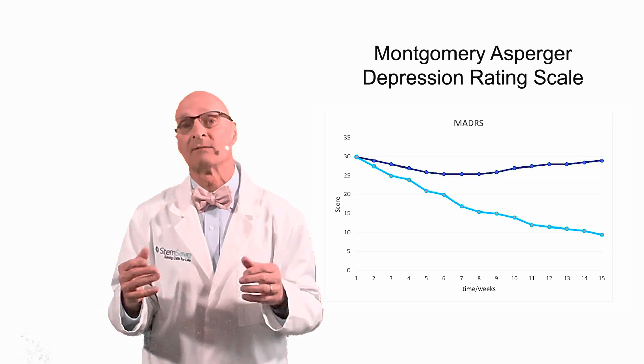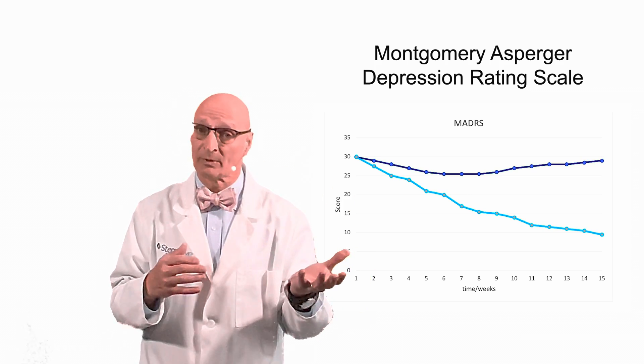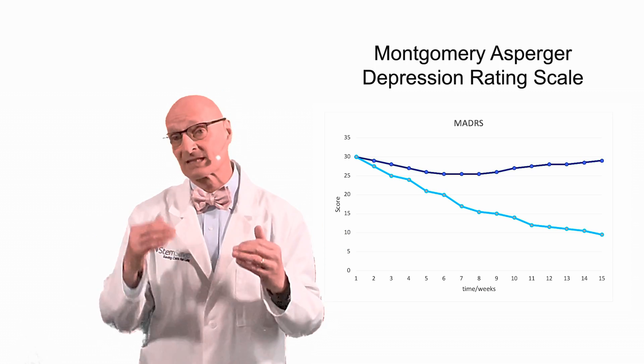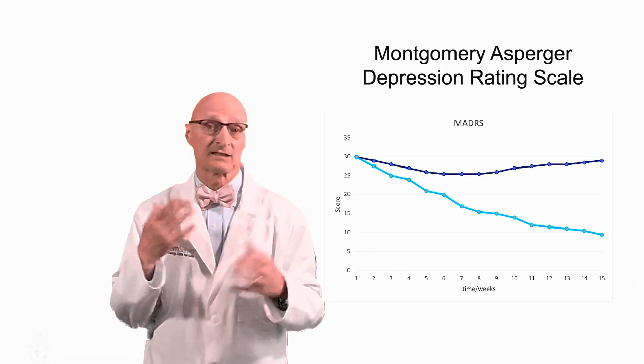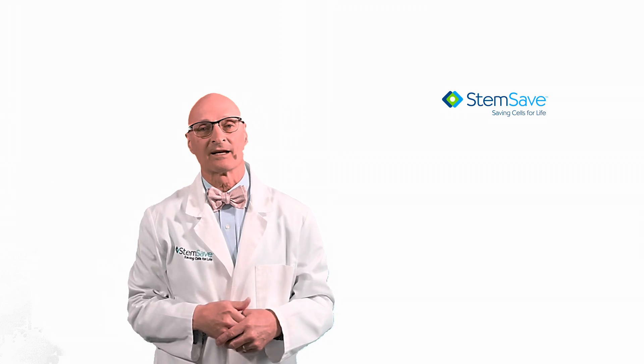Decreases in the total scores on the Montgomery-Asperger depression scale between the experimental group and the control group will be evaluated to determine the efficacy of the treatment. Needless to say, we will continue to update you on the status of this trial and others involving DPSCs. Thank you for watching. Don't forget to like us and to subscribe and we'll see you again soon.